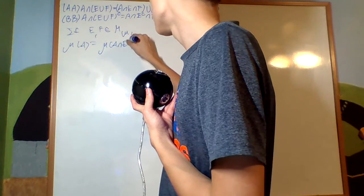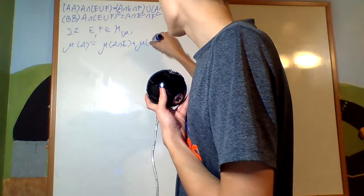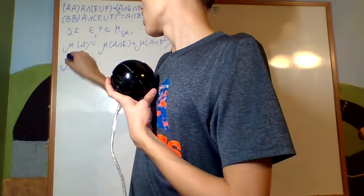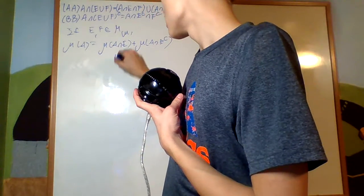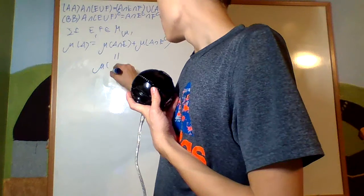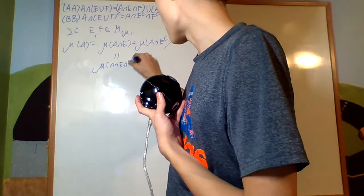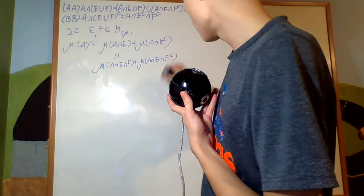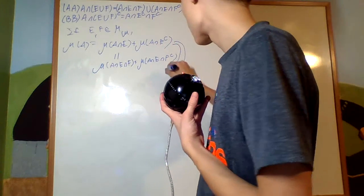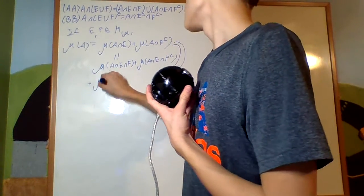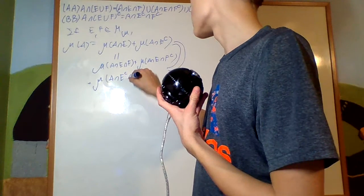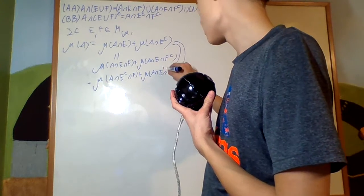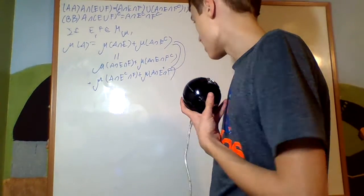That's going to be μ(A∩E) + μ(A∩E complement), by measurability of E. But if I analyze each of these, that first term is going to be μ(A∩E∩F) + μ(A∩E∩F complement).